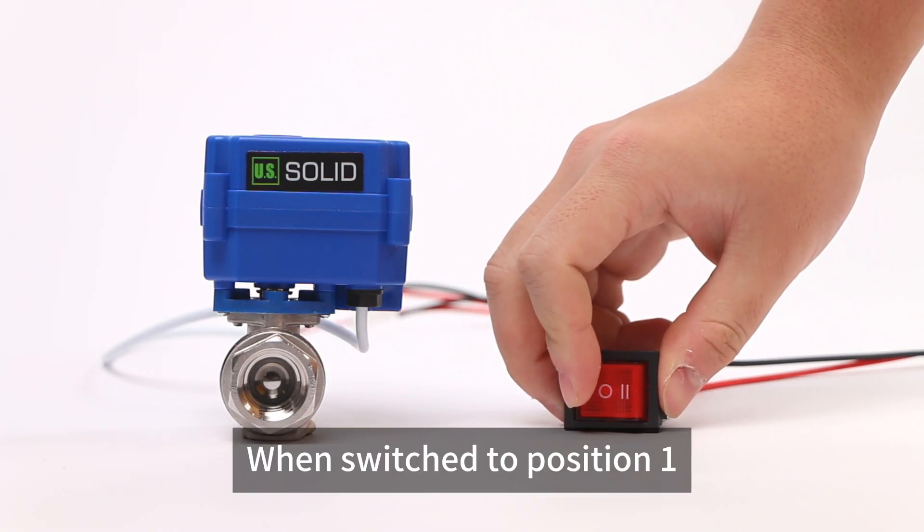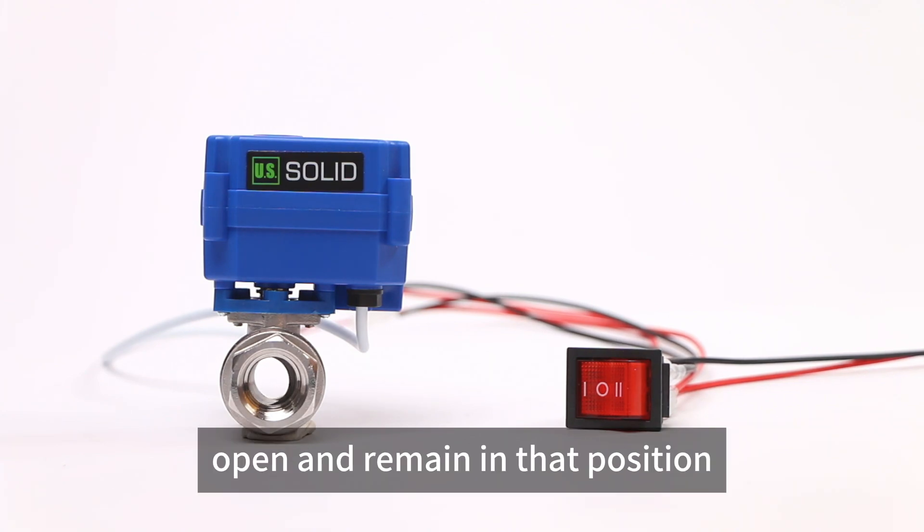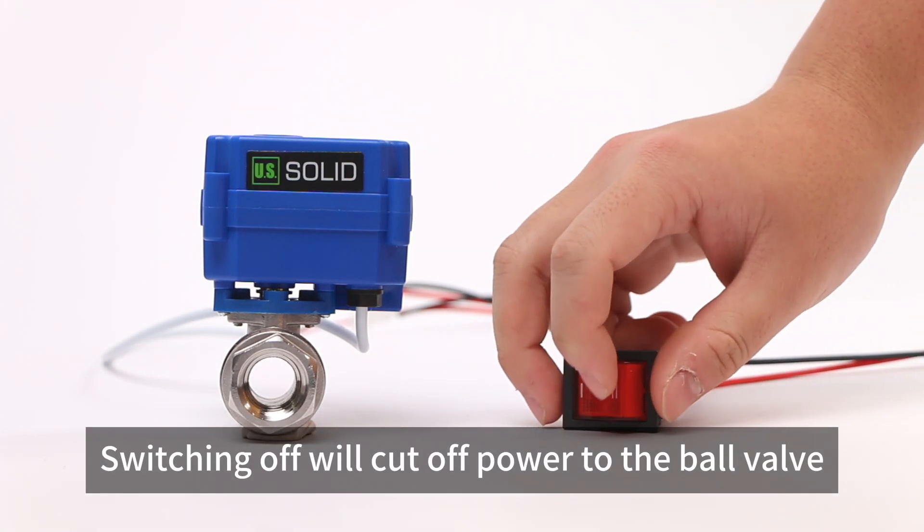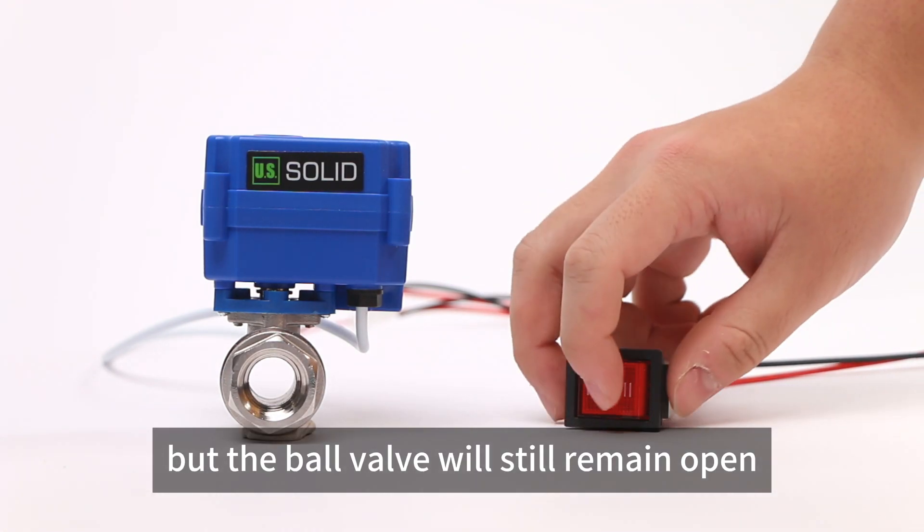When switched to position 1, the ball valve will also open and remain in that position. Switching off will cut off power to the ball valve, but the ball valve will still remain open.